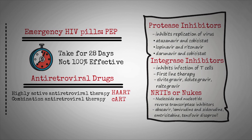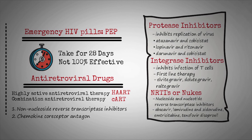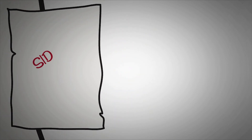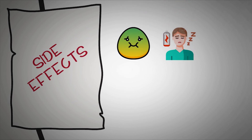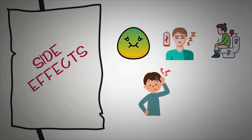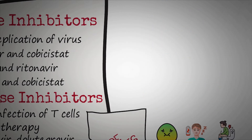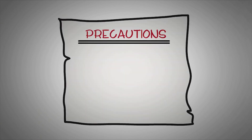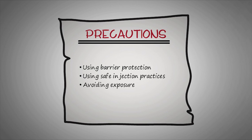Some other less common medications include non-nucleoside reverse transcriptase inhibitors, chemokine co-receptor antagonists, and entry inhibitors. People often benefit from a combination of antiretroviral drugs, and the right combination depends on factors specific to each person. Each class of antiretrovirals has different side effects, but common ones include nausea, fatigue, diarrhea, headaches, and rashes. Prevention strategies include using barrier protection, using safe injection practices, and avoiding exposure to relevant body fluids.